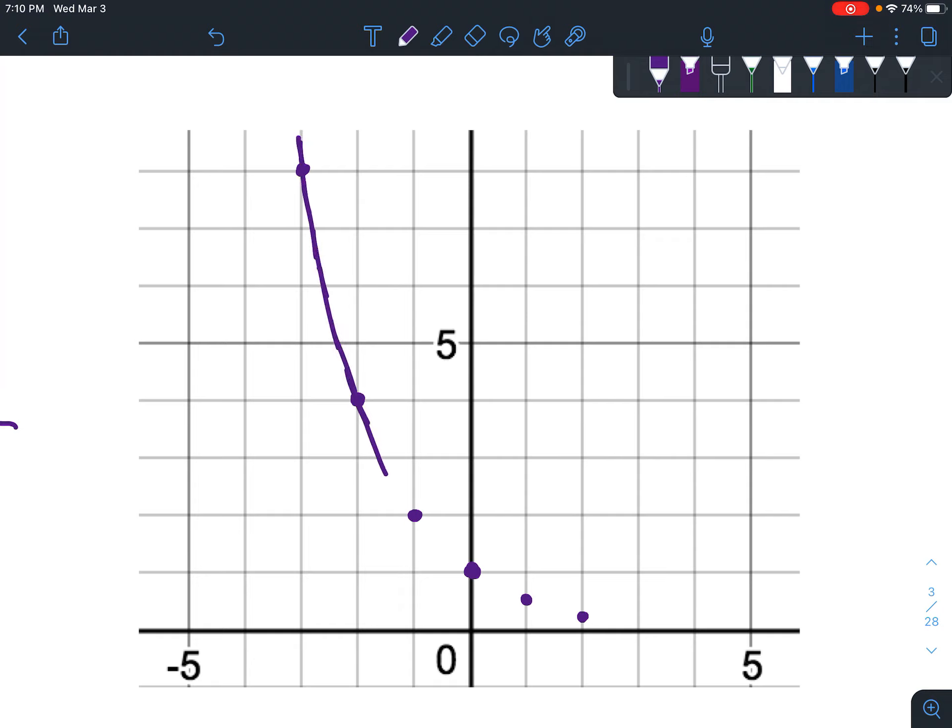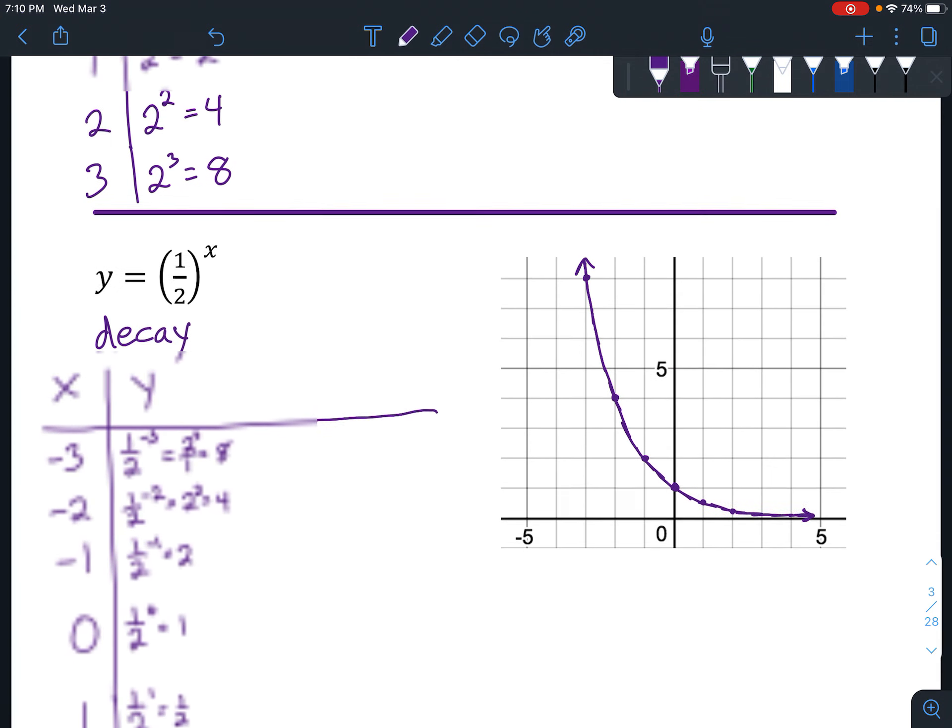So we know that it's going to be getting very close to the x-axis, but it's never going to quite touch it. It'll probably look like it's touching it on my graph. It just visualizes it's not actually touching it. All right, I think that's it for today.